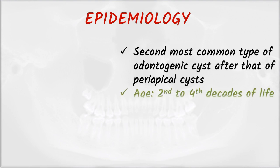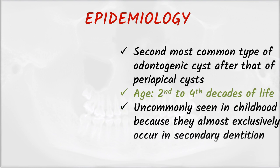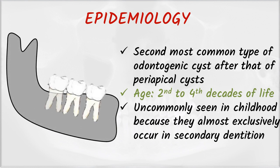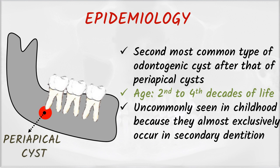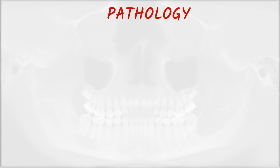One important thing to notice is that the cyst is attached to the CEJ. Epidemiology: it is the second most common odontogenic cyst after the periapical cyst. Age: second to fourth decades of life, and it is uncommon in children as third molars are absent in children. The periapical cyst is the first most common odontogenic cyst, and the dentigerous cyst is the second most common.